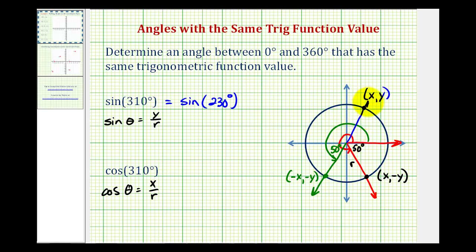The reference angle is going to be the same — this angle here would be 50 degrees. Notice how the x coordinate is the same and the y coordinate is different, but looking at the cosine function value, we're only concerned about the x coordinate. So cosine 310 degrees would be equal to cosine 50 degrees.